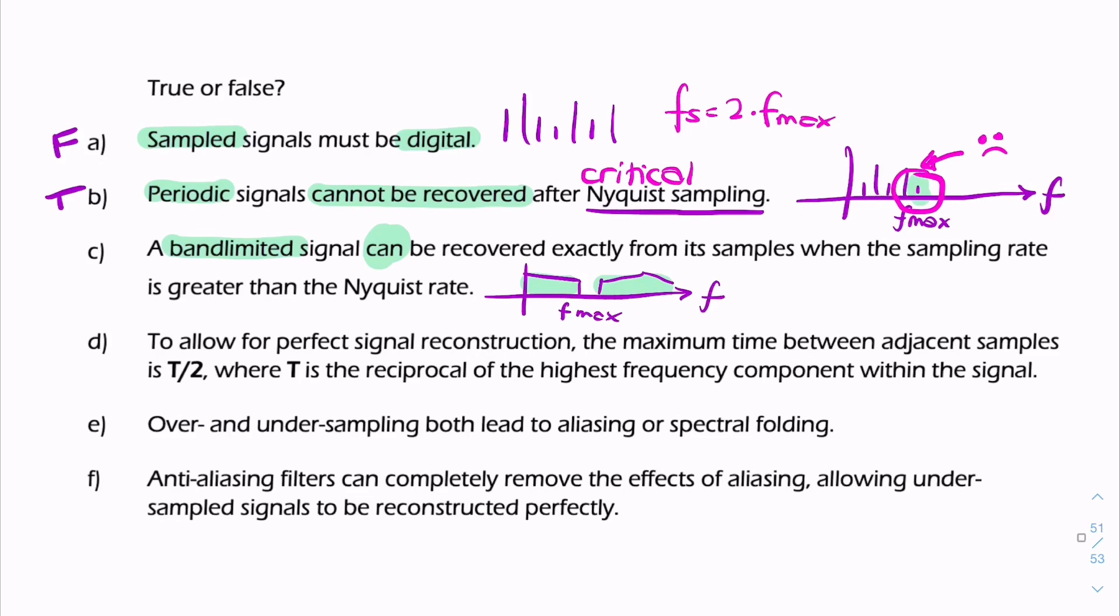When it says the sampling rate is greater than, that means we're over-sampling. So fs is greater than 2 f max. So that's true.